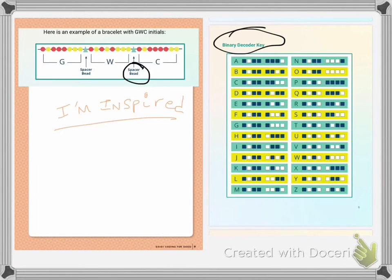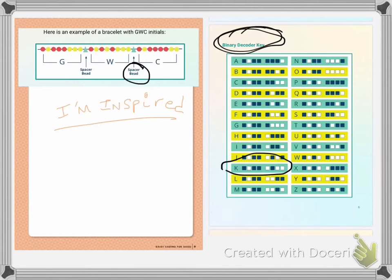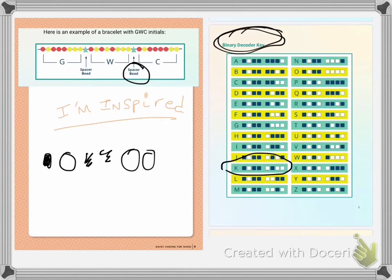My initials would be K, J, Q — Kristen Joy Quell. So I would go to my binary key and look at the K. I would put in my K initial beads: black bead, black bead, white bead, black bead, black bead, white bead, white bead, black bead, black bead. And then I would put in a spacer bead.